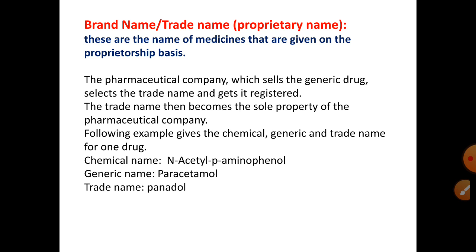The pharmaceutical company that sells a generic drug selects the trade name. If a company has a product — for example, paracetamol — they select a particular trade name and register it. For instance, Panadol is a brand name for paracetamol; the company registers it and then sells it under that name.